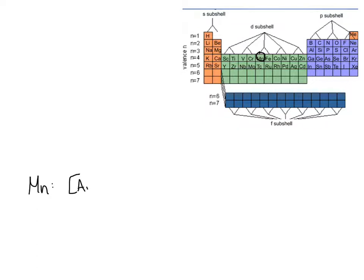Let's do Ar in brackets, and that means I can start after Ar. So, I could do 4s2, 3d, and if I count d, I get to 5.